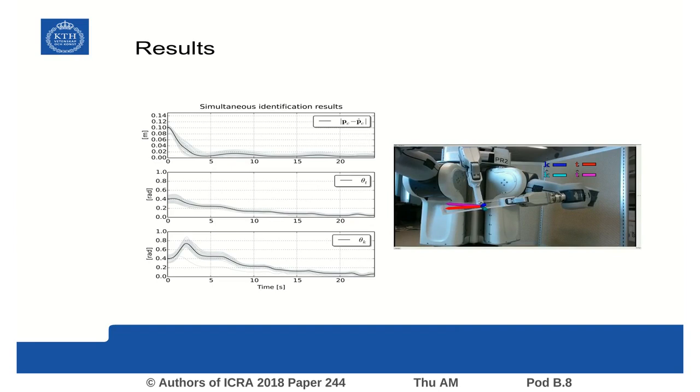After an initial transient, the estimation converges to a close vicinity of the real values.